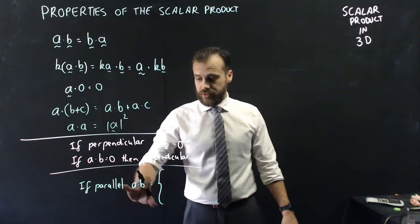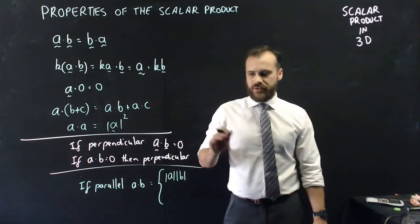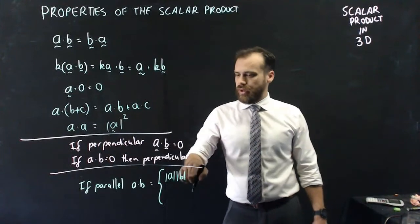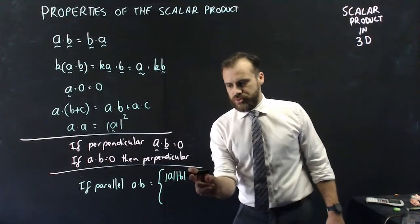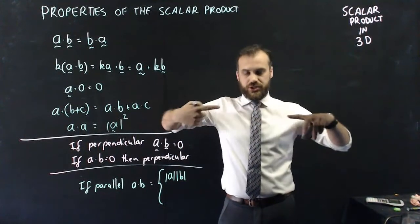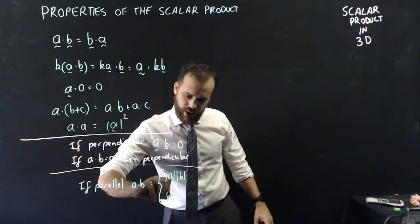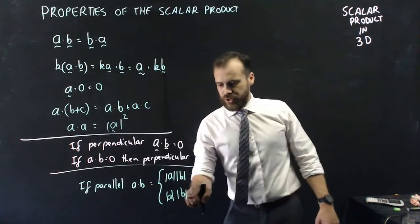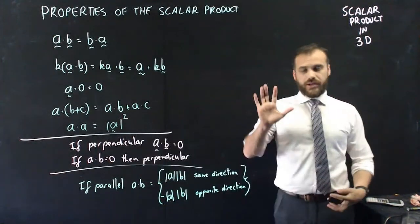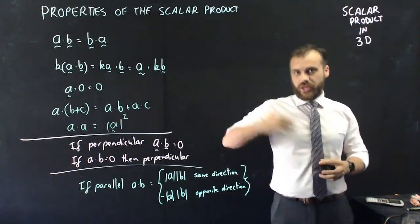If two vectors are parallel, A dot B has two options. If they point in the same direction, the angle between them is zero, so A dot B equals magnitude A times magnitude B times cosine zero, which is just magnitude A times magnitude B. If they're parallel but in opposite directions, the angle is 180 degrees, and cosine 180 is negative one, so A dot B equals negative magnitude A times magnitude B. That's the scalar product in 3D — everything you already knew just applied to the third dimension.